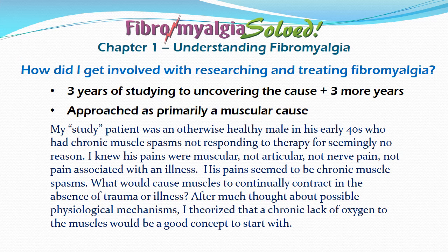I knew his pains were muscular — not articular, not nerve pain, not associated with an illness. His pain seemed to be chronic muscle spasms. What would cause muscles to continually contract in the absence of trauma or illness? After much thought and study about possible physiological mechanisms, I theorized that a chronic lack of oxygen to the muscles would be a good concept to start with.